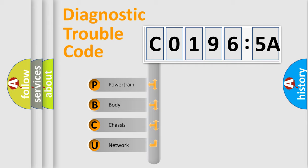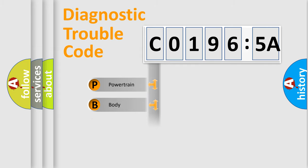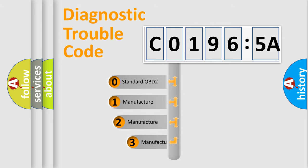We divide the electric system of automobile into the four basic units: Powertrain, Body, Chassis, and Network. This distribution is defined in the first character code.